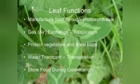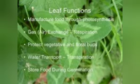Now what are the various functions of leaves? Leaves are basically the kitchen of the plant — they are the food makers. They make food through photosynthesis. The leaves also facilitate an exchange of gases; respiration takes place through the stomata. They also protect vegetative and floral buds. Water transport through transpiration is also their function, and leaves also help in germination — for example, bryophyllum. So the basic functions of a leaf are: manufacture of food, exchange of gases, protecting vegetative and floral buds, water transport through transpiration, and storing food during germination.